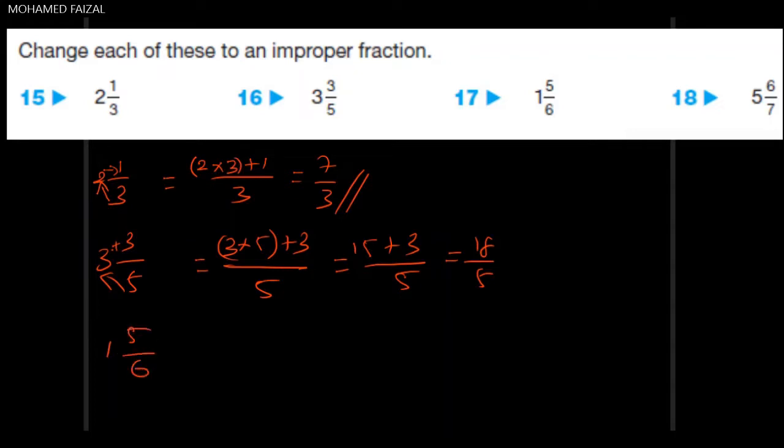Similarly, 1 and 5 by 6. So 6 into 1 plus 5 by 6. 6 into 1, 6 plus 5 by 6 equals 11 by 6.